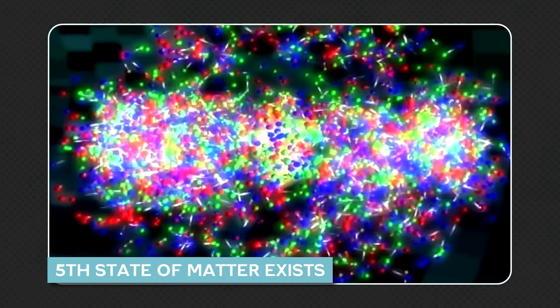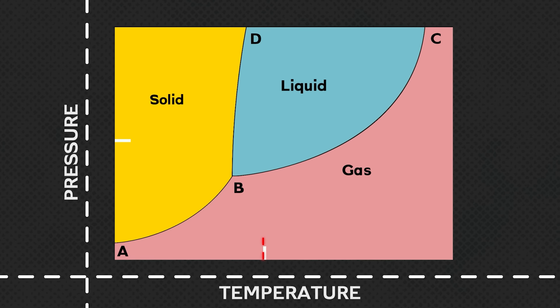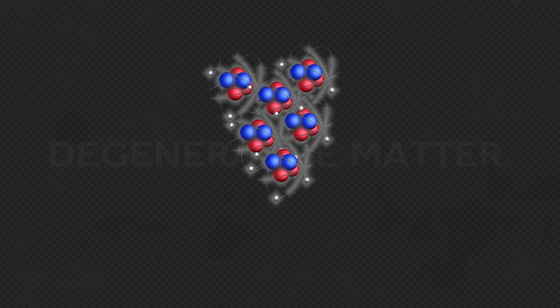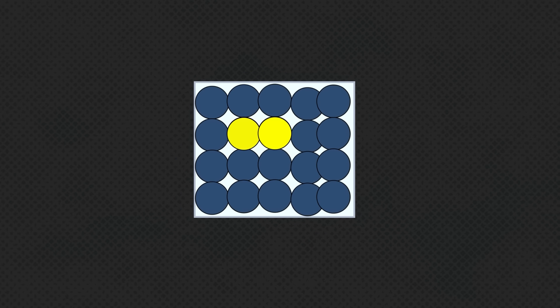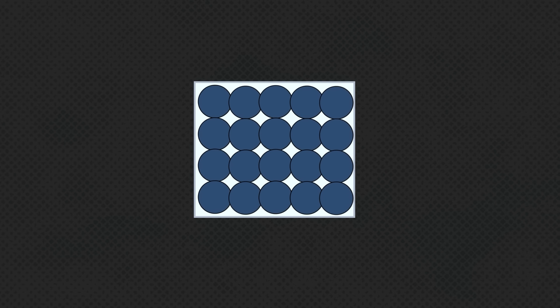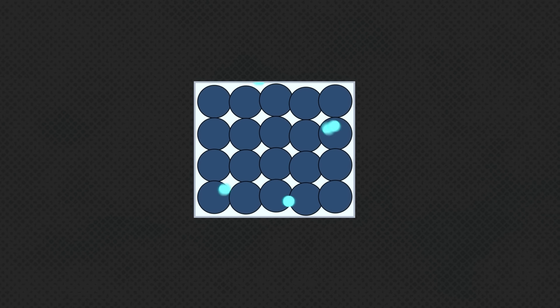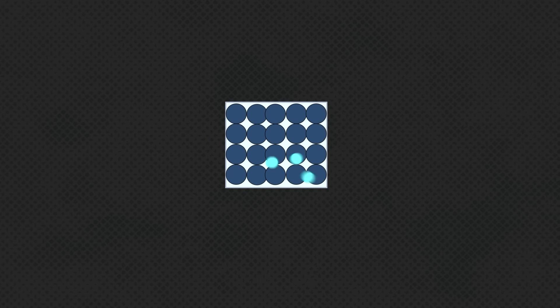अगर हमने temperature constant रखकर pressure को increase किया, तो matter पहुँचेगा degenerative matter के state में। यह एक ऐसा extremely high density matter है जिसमें pressure, temperature पर depend नहीं करता। Extreme pressure के अंदर particles compress होते हैं, लेकिन यह compression एक limit तक ही हो सकता है — जब तक particles के बीच में space मौजूद है। क्योंकि दो particles same time पर same space occupy नहीं कर सकते, atoms degenerate हो जाते हैं और अपना original structure खो देते हैं। एक point के बाद external pressure भी unstable हो जाता है और atomic nuclei भी अपना structure loose कर देते हैं।